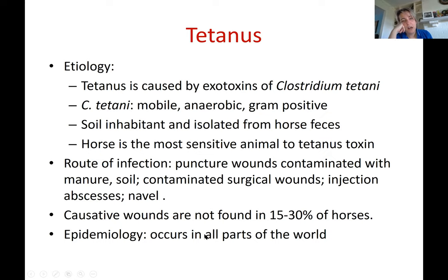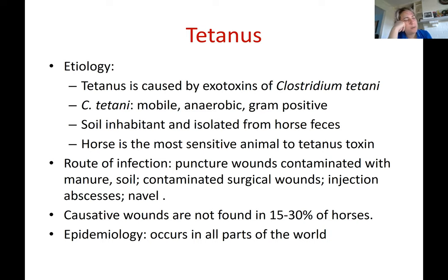The most common route of infection is puncture wounds contaminated with manure or soil where the bacteria is present. Puncture wounds create the optimum environment for the bacteria to release its toxins. Even in humans, it's not necessarily puncture wounds — sometimes bike accidents or motorcycle accidents can lead to infection.